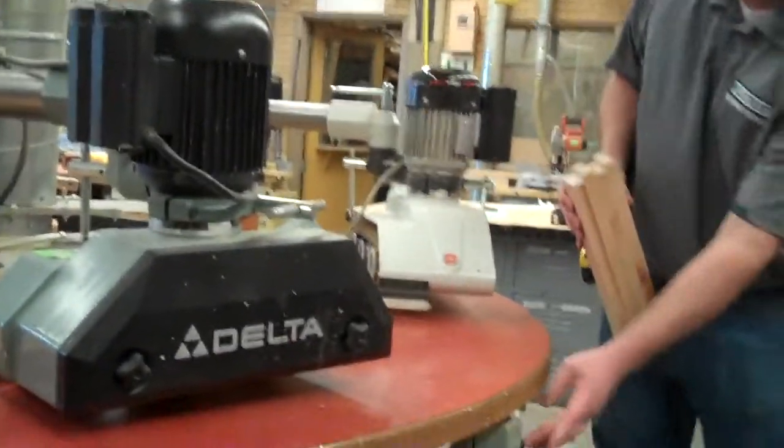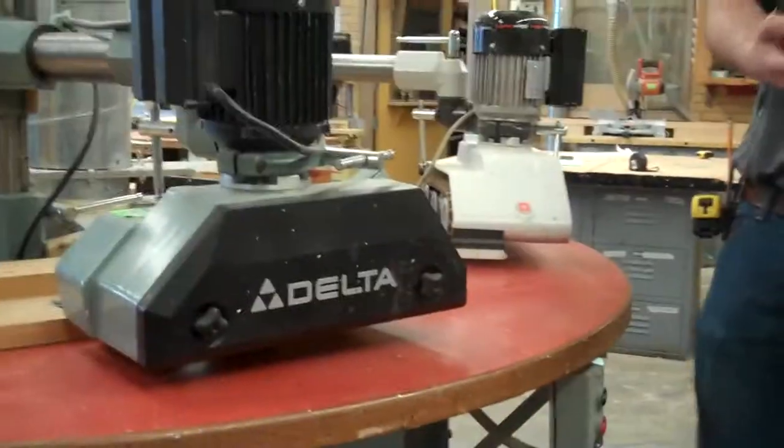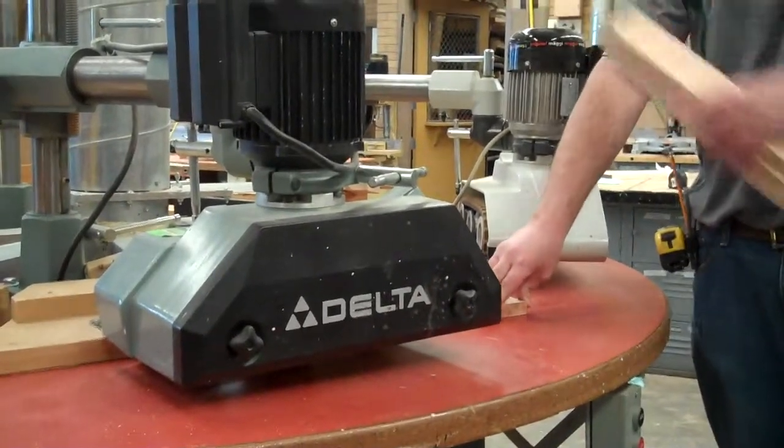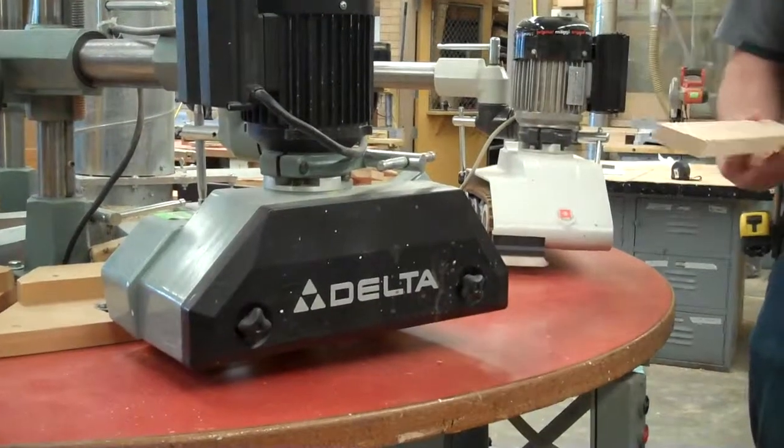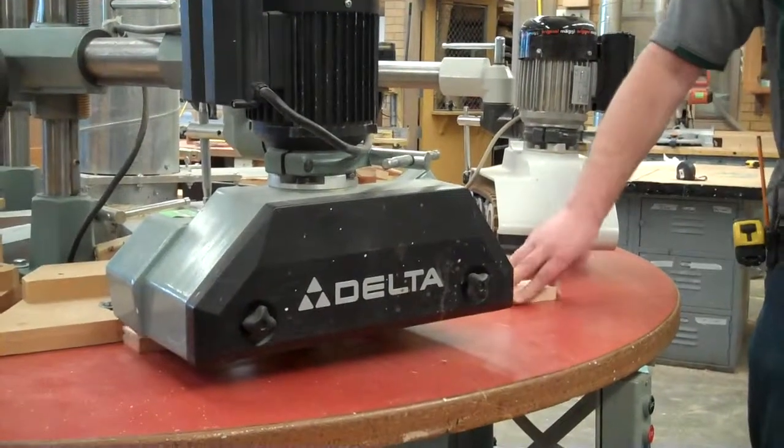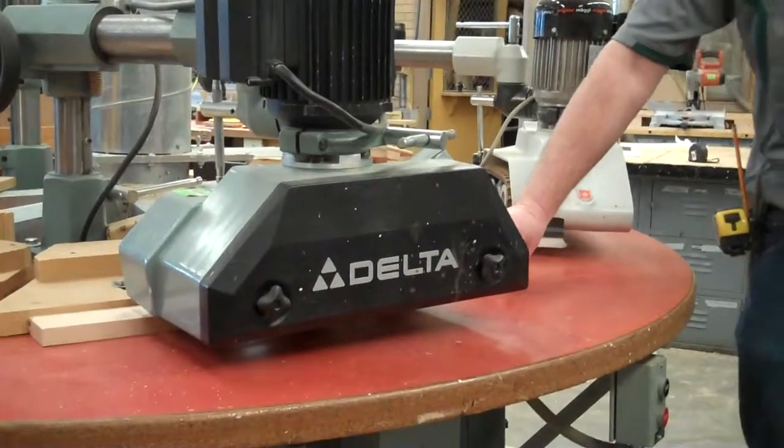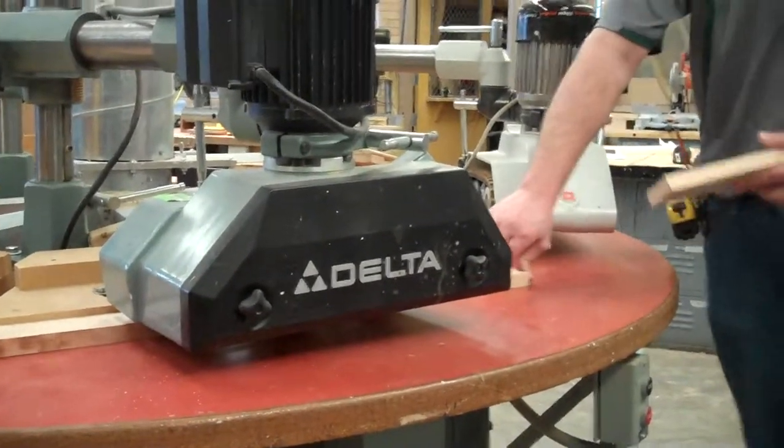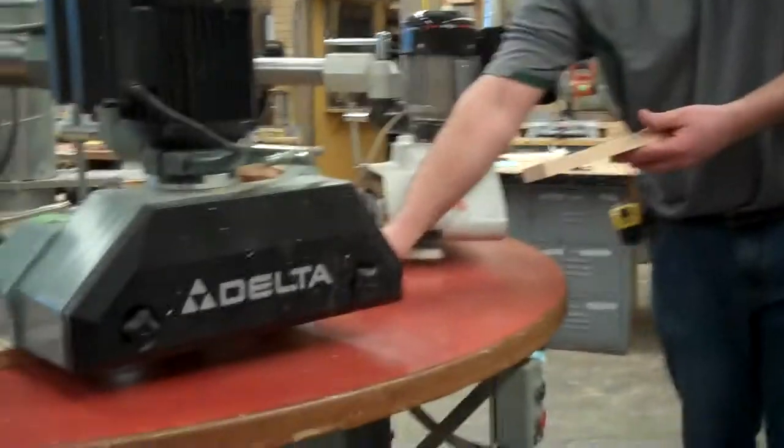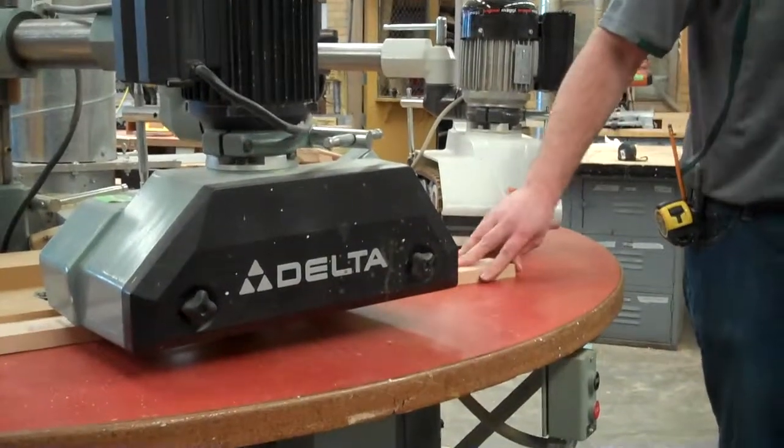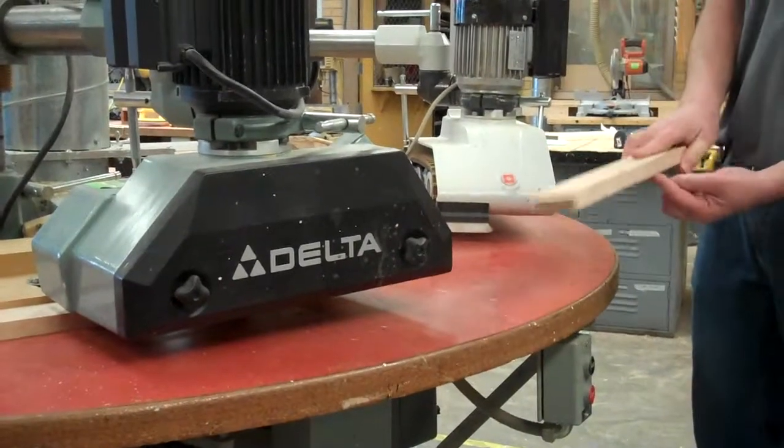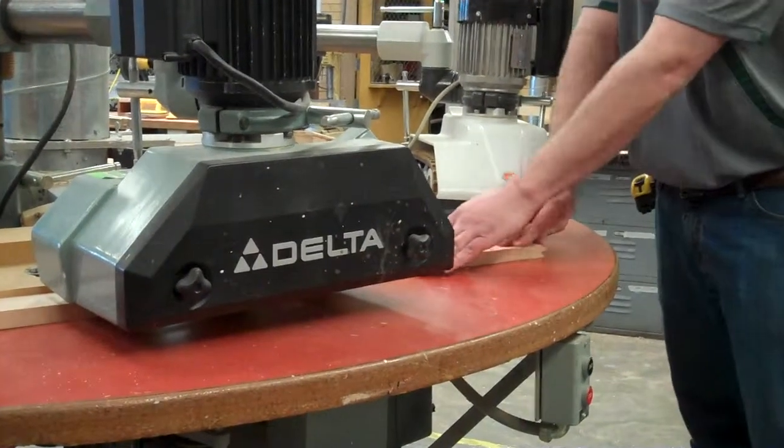X down as you run these through. You can have someone catch for you on that side. That'll help you out. Send them all through, rails and styles. One edge. Don't forget to send your rails. X down.